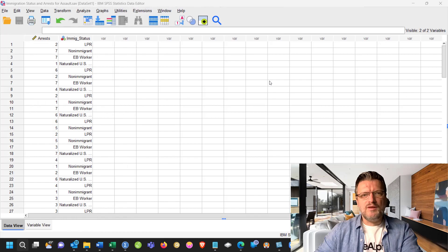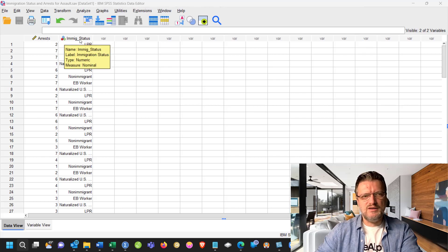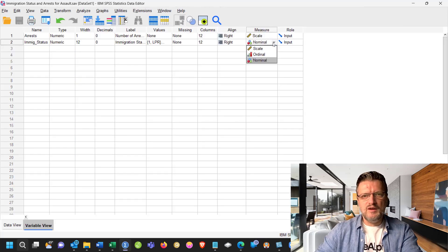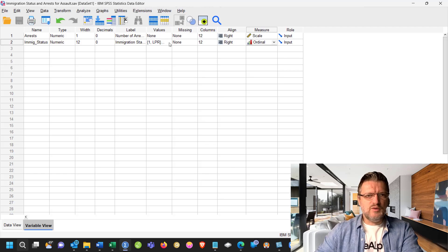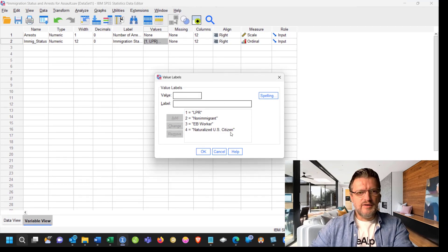As you can see, the data in SPSS does not look different from the data in Excel. You have two columns, arrests and immigration status, both variables. Arrest is the numerical variable. Immigration status is the ordinal variable, and I can assign it over here in the variable view. Ordinal, this is scale. Scale means numerical variable. And as well, in the values, we can see the attributes for the categorical variable. We have the four categories, LPR, non-immigrant, EB worker, naturalized US citizen.